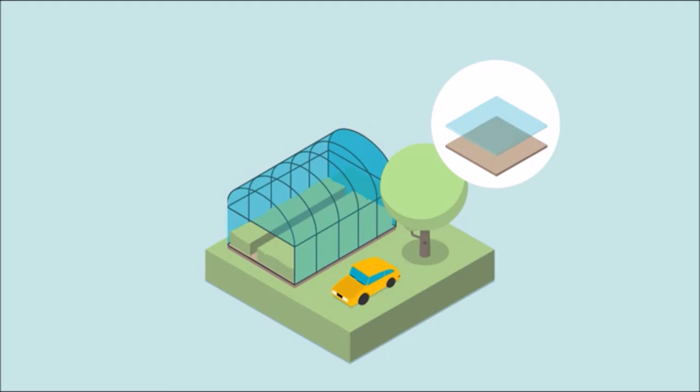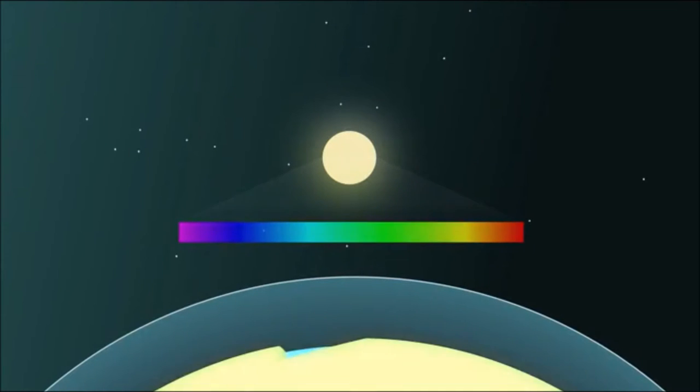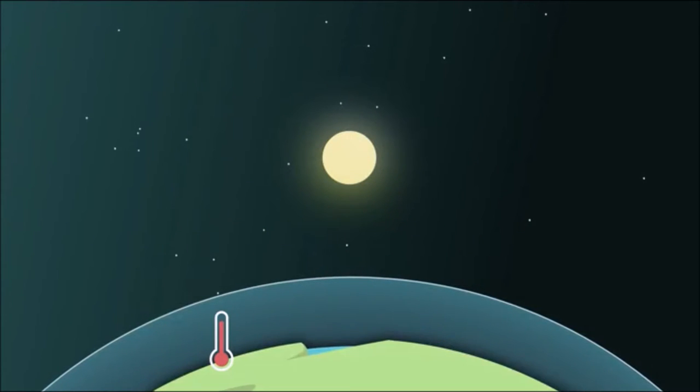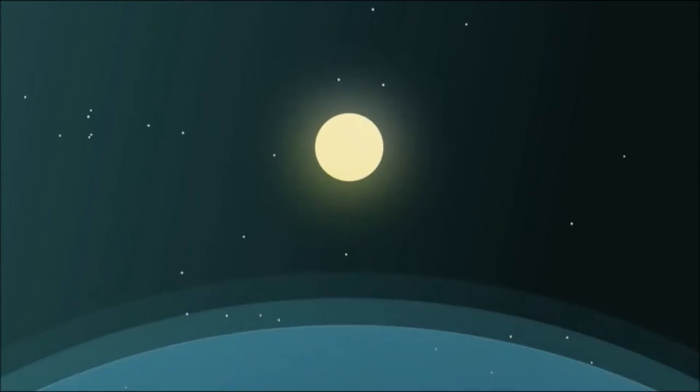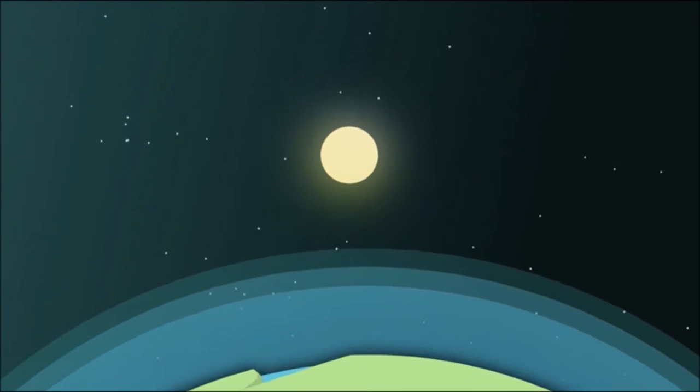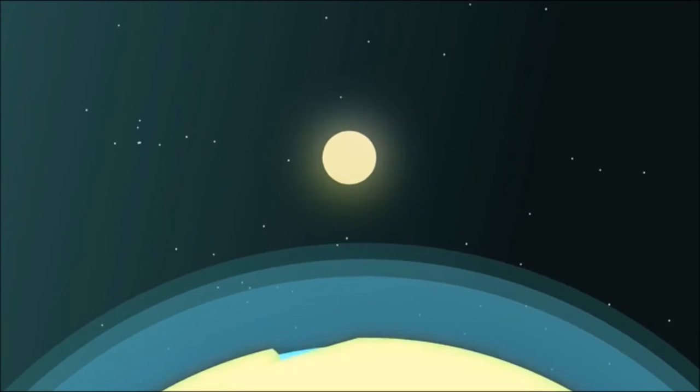So the atmosphere acts a bit like glass letting visible light through to warm the earth. But some of the heat or infrared radiation now given off gets absorbed by certain gases in the atmosphere. And these are the gases we call greenhouse gases. In this way the earth is kept warm and we say there is a natural greenhouse effect.